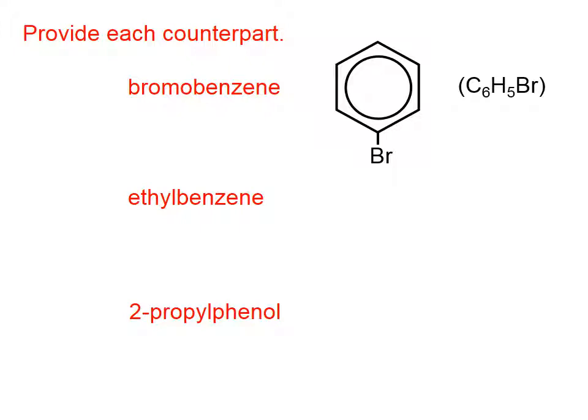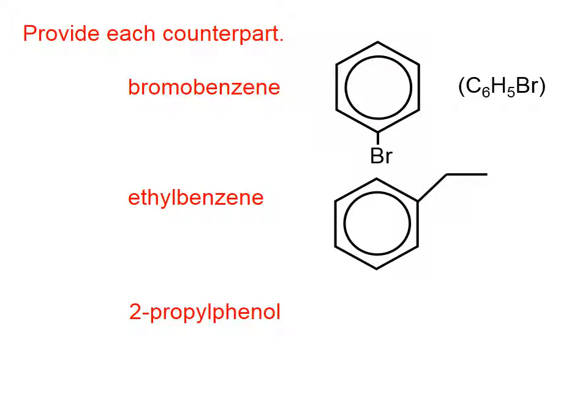Let's try the next one: ethylbenzene. I'm going to start with a benzene, and now I'm going to put an ethyl group hanging off. Doesn't matter where. If we were to count up the carbons, we have six in the ring, and then there's number seven and there's number eight, so that's eight carbons. If we're counting hydrogens, ten.